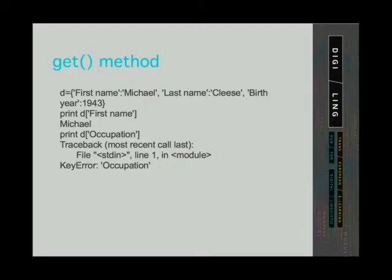Until now, we have addressed keys that were in a dictionary. However, there will be situations where we will ask for a value of a key that cannot be found in a dictionary. When that happens, the program will return an error. The error will say keyError and the name of the key with which the program has problems.